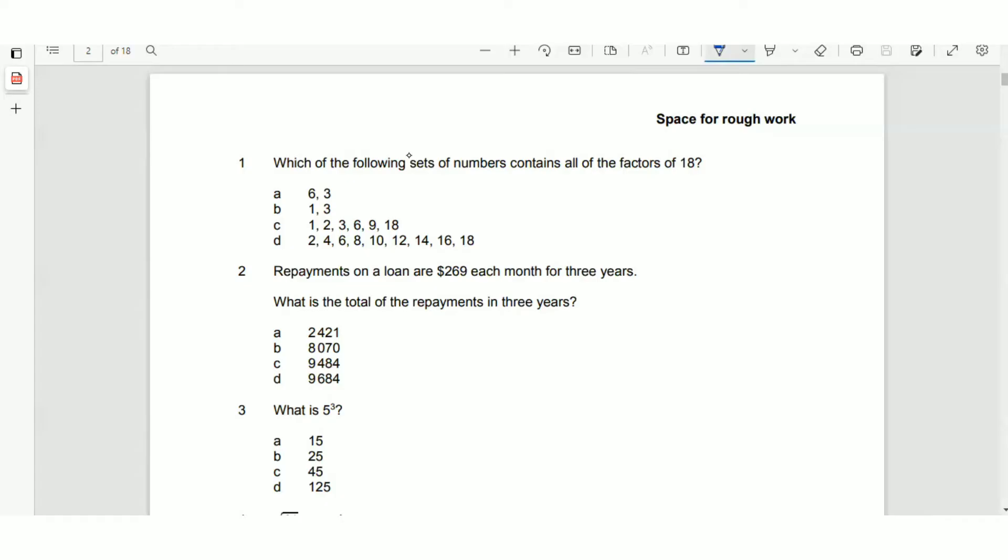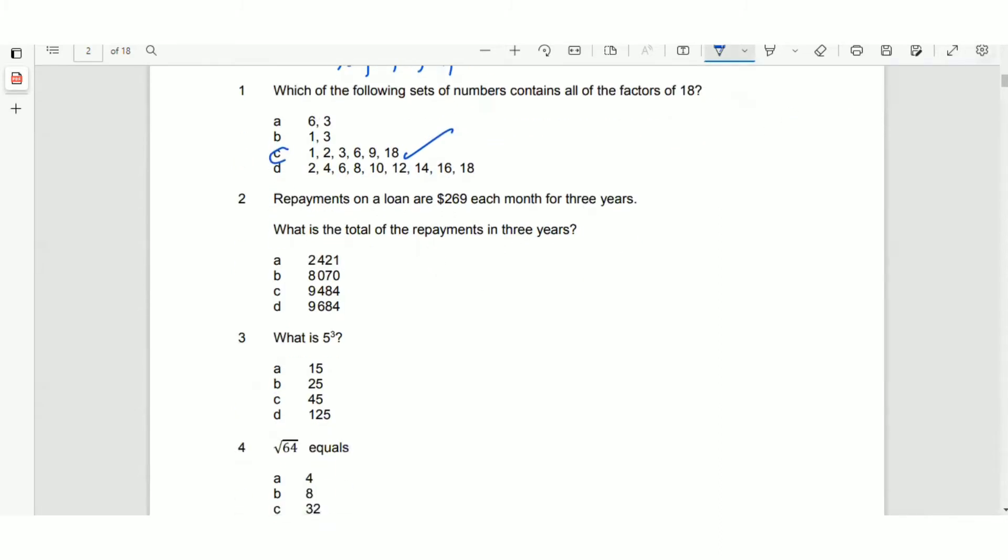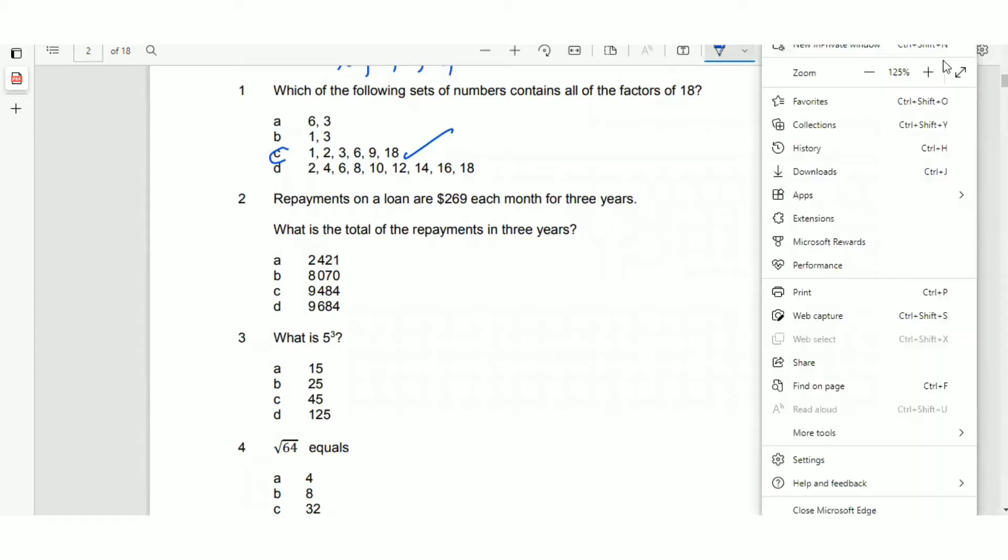Let's go. It says which of the following sets of numbers contain all of the factors of 18? Factors of 18 are numbers that can actually go into 18 without leaving a remainder, so we want to make sure that we are getting those out. What are all the numbers that can go into 18 without a remainder? Here it is. Number one is C.